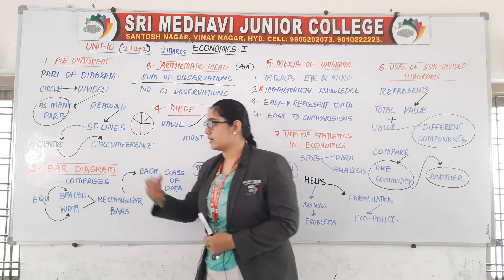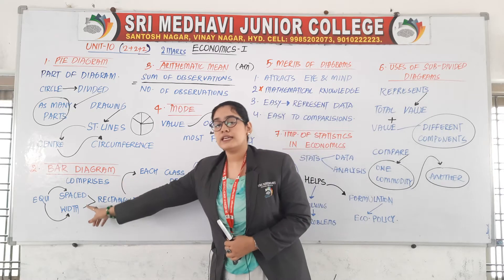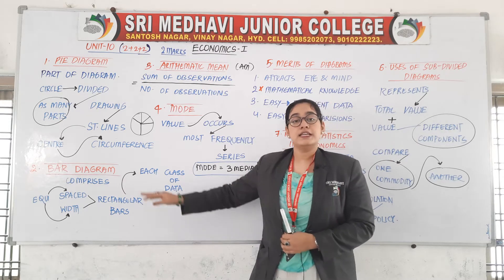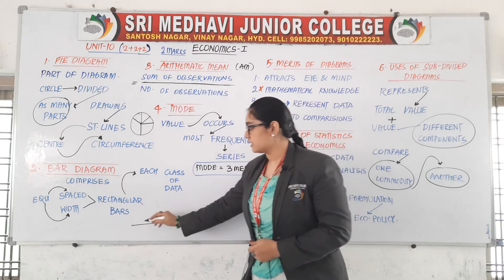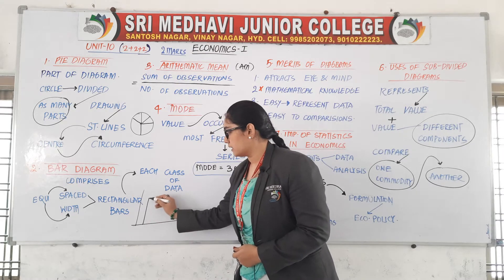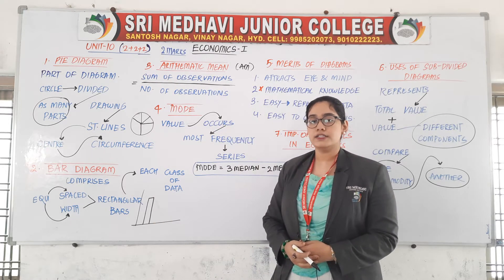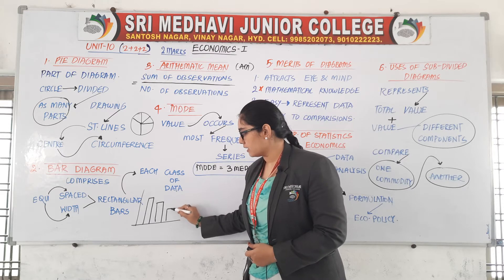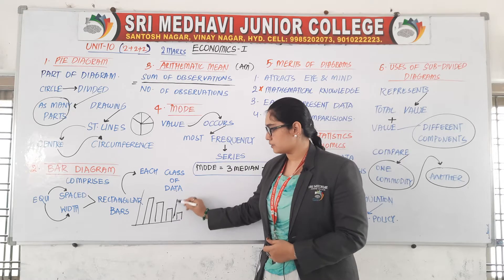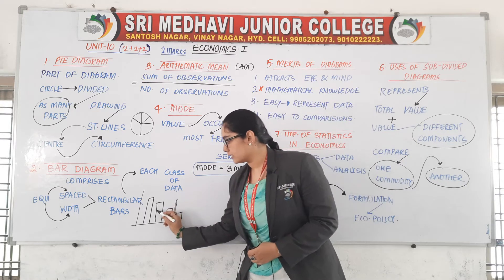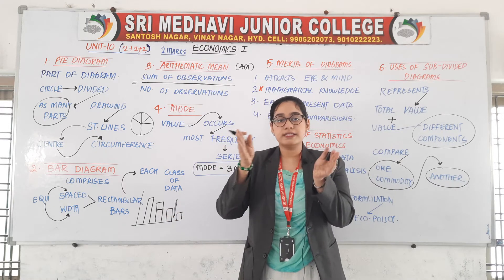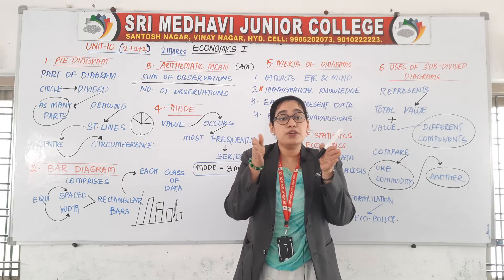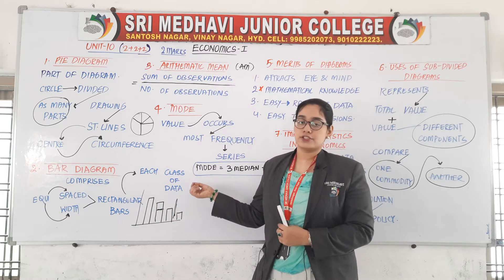The second concept is bar diagram. It comprises of equi-spaced and equi-width rectangular bars, each representing each class of data. For example, if this is the x-axis and this is the y-axis, and I draw rectangular bars, the space between the bars must be equal, and the width of the bars must also be equal. So a bar diagram comprises of equi-spaced and equi-width rectangular bars representing each class of data.